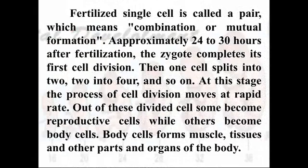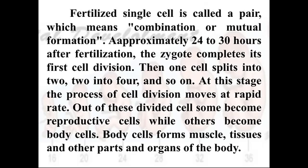The fertilized single cell is called a zygote, which means combination or mutual formation. Approximately 24 to 30 hours after fertilization, the zygote completes its first cell division. Then one cell splits into two, two into four, and so on. The process of cell division is very rapid at this stage. Out of these divided cells, some become reproductive cells and some take the shape of body cells.